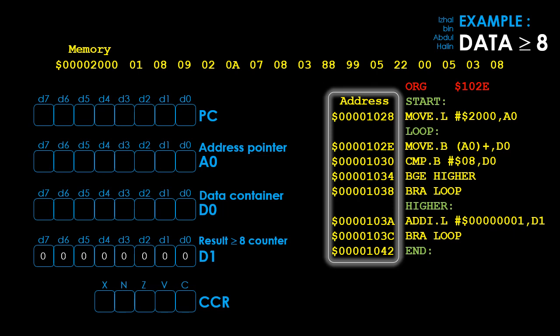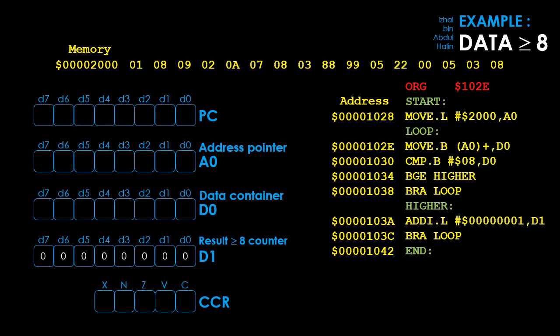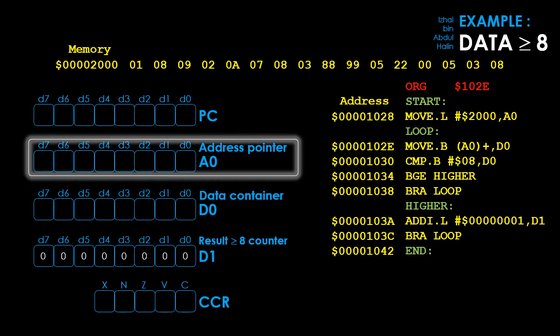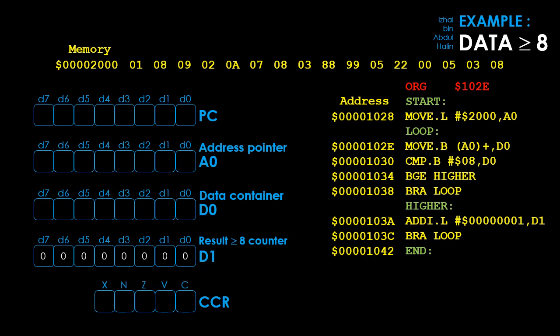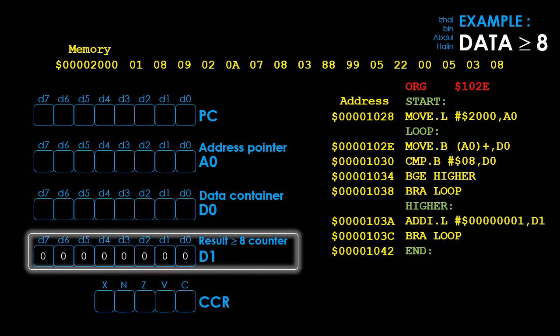Here we have our program counter to track program execution. Address register A0 is our address pointer. Data register D0 acts as our data container — here we determine whether data from memory is larger than or equal to 8. Data register D1 is used as our counter; it will be incremented by one each time the data tested in D0 is larger than or equal to 8. D1 is initially reset to 0.